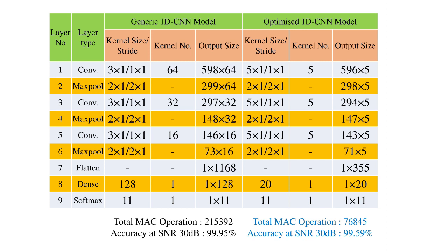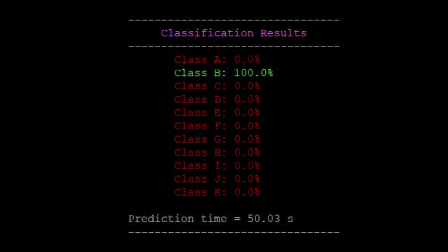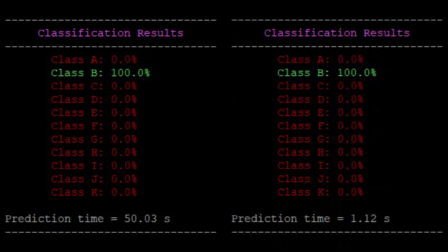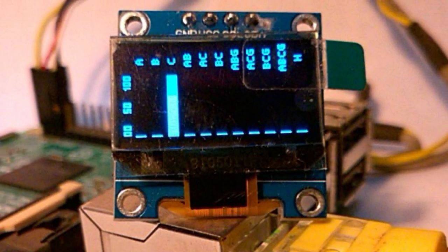So compared to the previous architecture, the MAC operations are reduced by 64.32% with a negligible accuracy loss of around 0.36%. All trainings were performed in a Python TensorFlow environment using an NVIDIA GPU. The trained models were saved, and later in our condition monitoring lab, a Python script was written from scratch for inference. The generic 1D CNN model takes on average 51 seconds to test a data sample, whereas the optimized model takes only 1.15 seconds. Please enjoy the following short demo of Raspberry Pi inferencing the 1D CNN models.